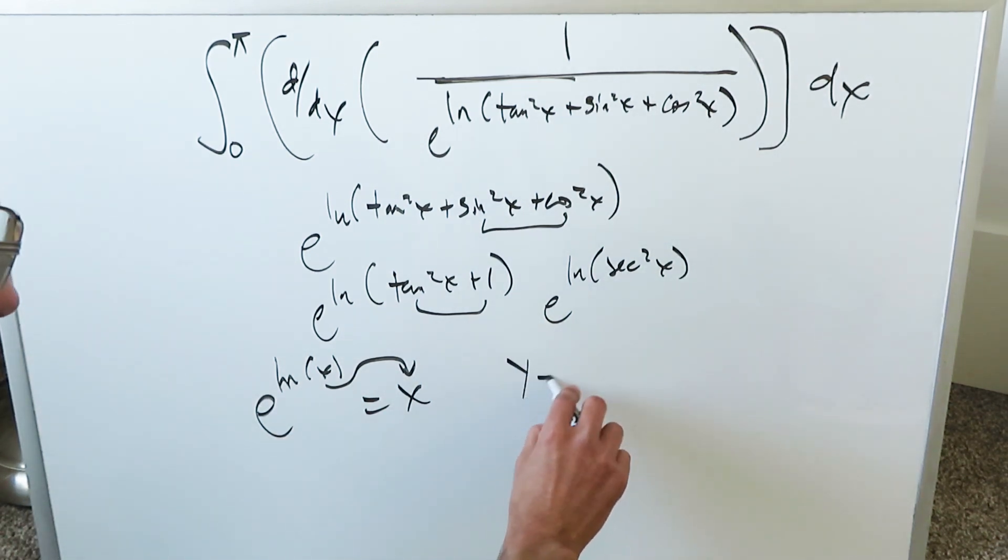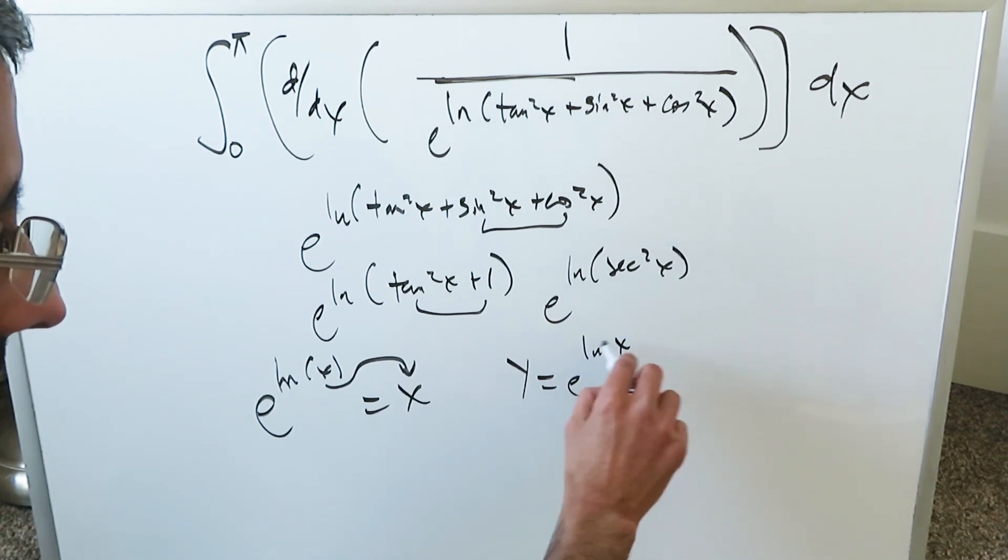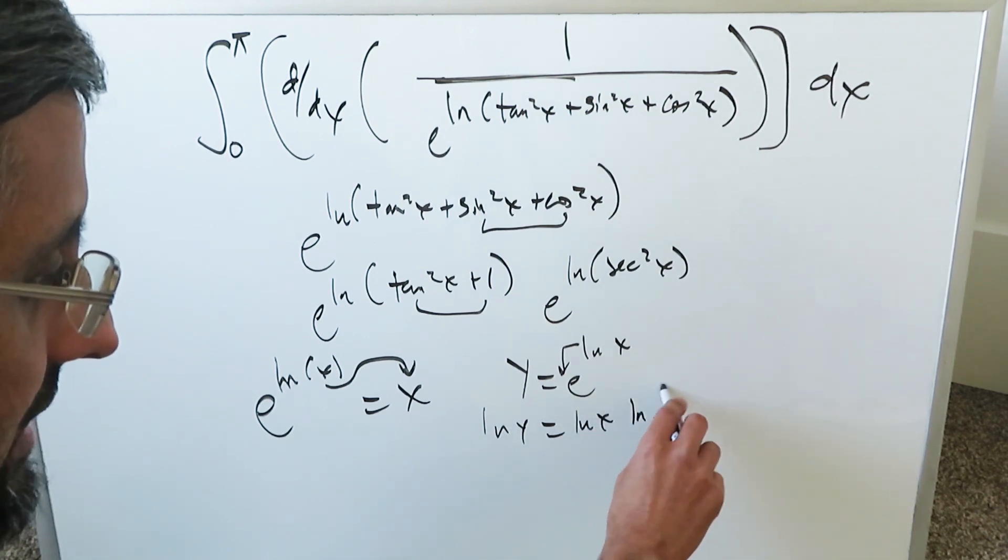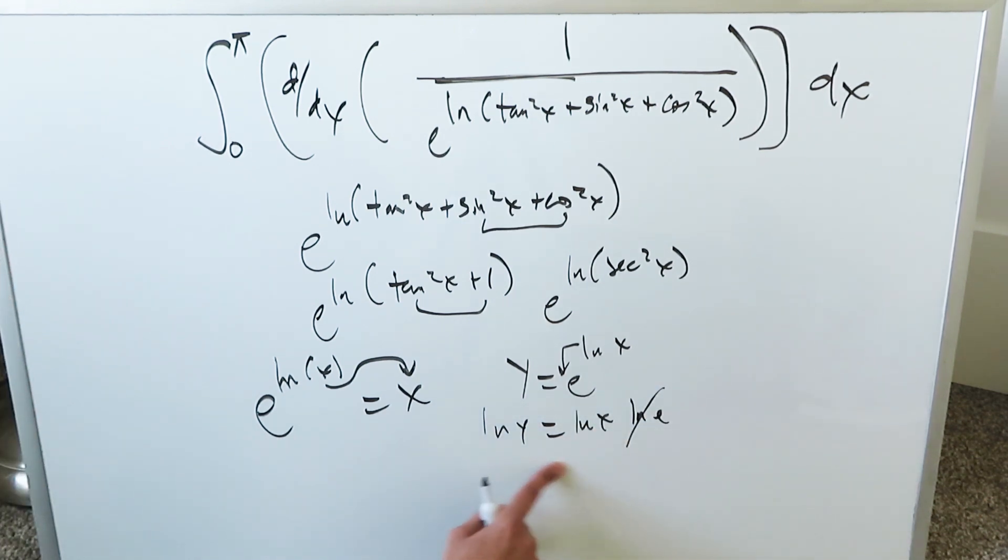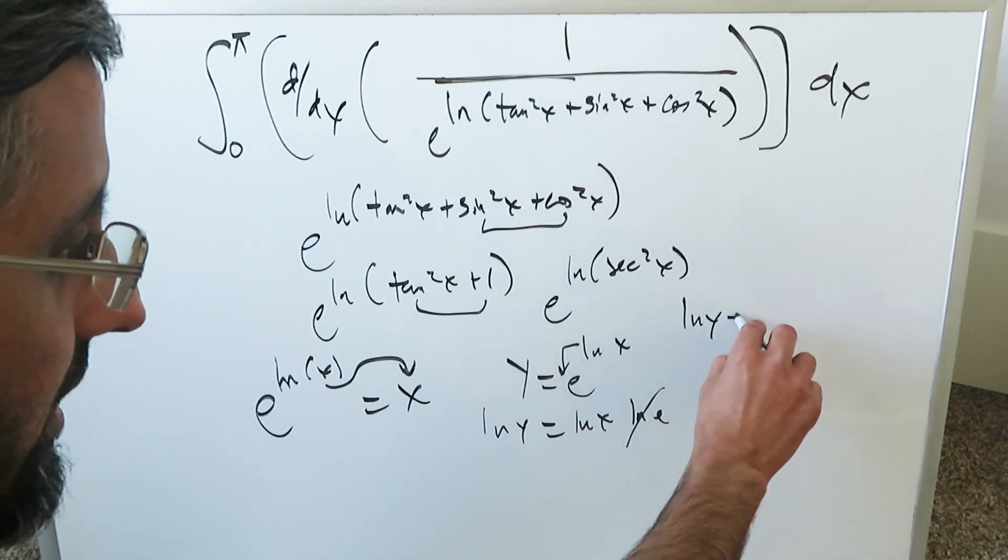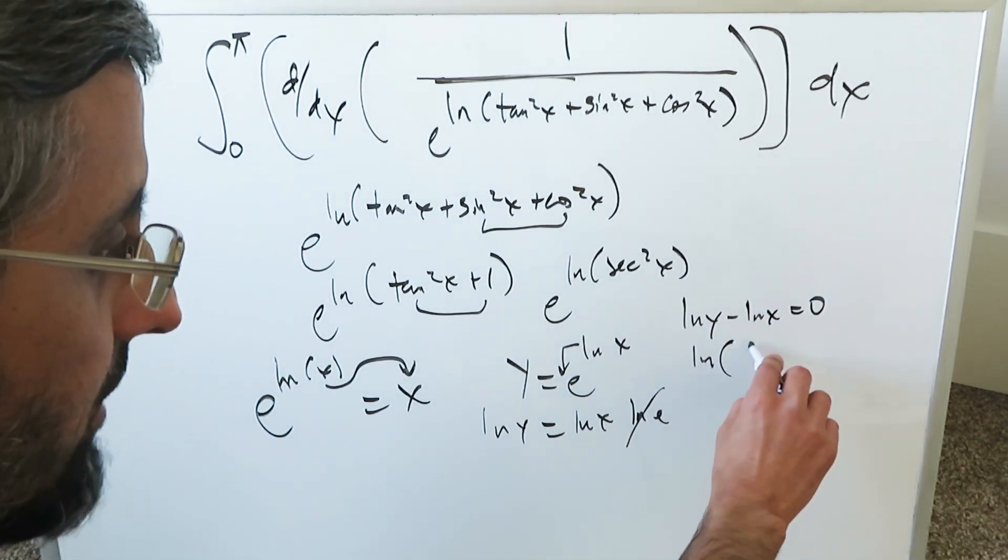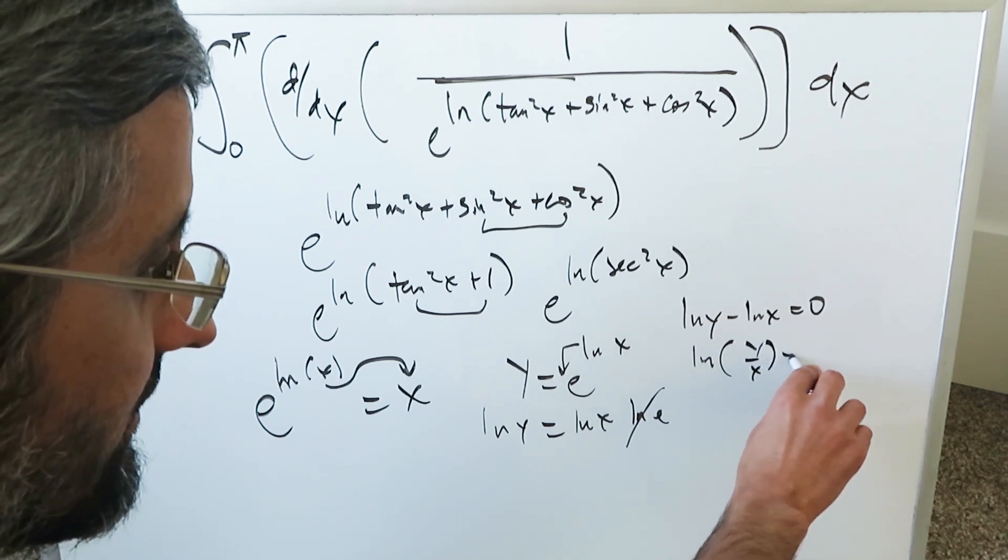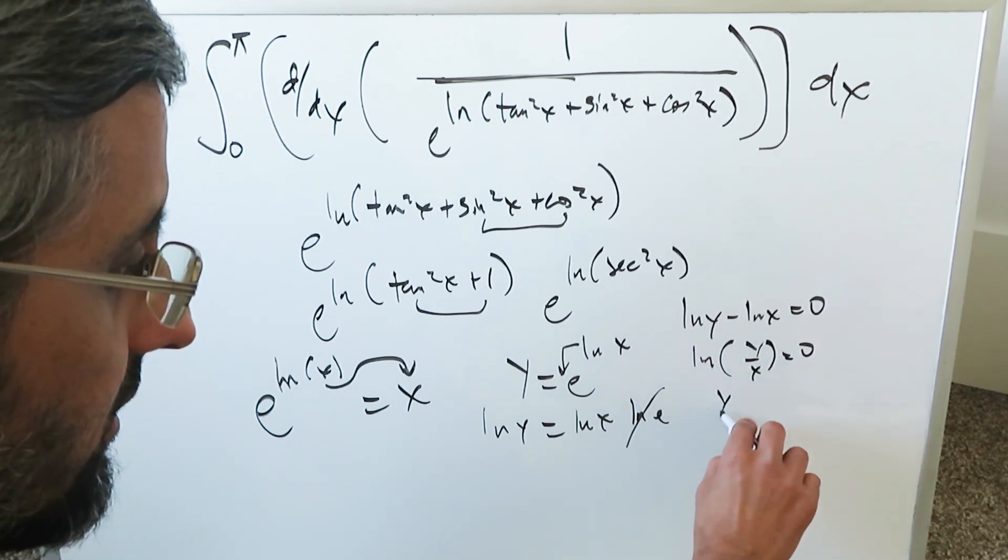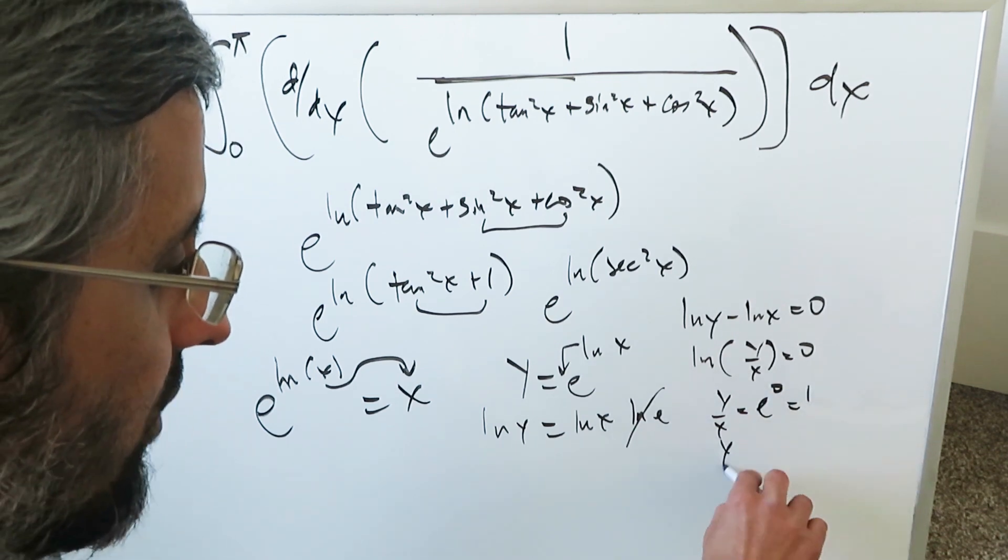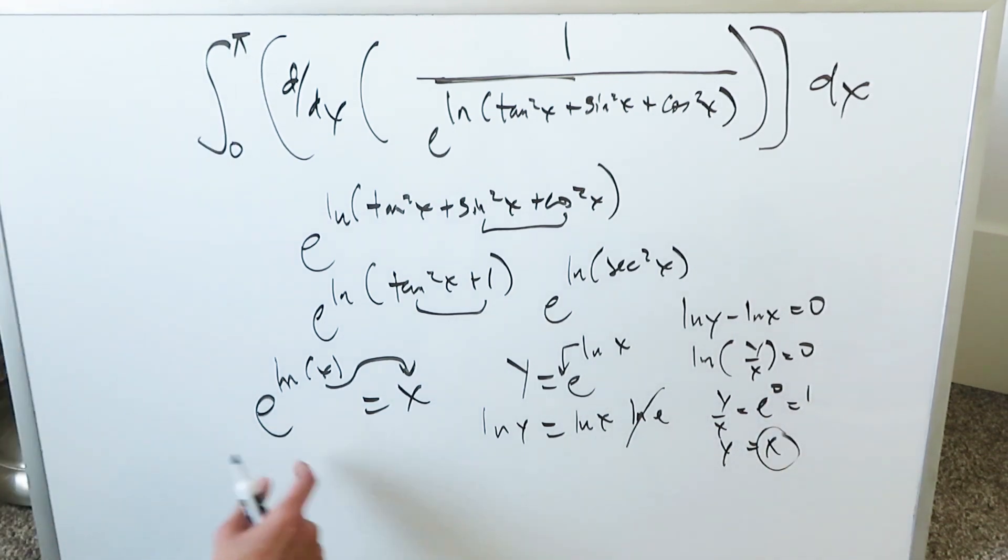You can do y is equal to e exponent natural log x. Take this over here and bring in the natural log. Natural log y is equal to natural log x natural log e. That's equal to 1. Take this on the other side. Natural log y minus natural log x is equal to 0. Bring everything under a common log: natural log y over x is equal to 0. Take the natural log on the other side. Y over x is equal to e to the power of 0 which is 1. Y is equal to x. Hence you're seeing anytime you look at something like this it's equal to x.